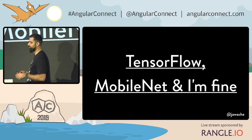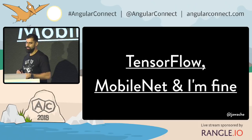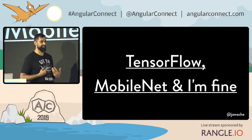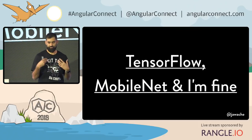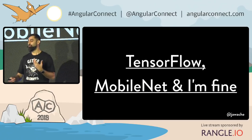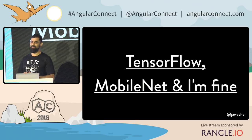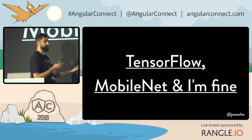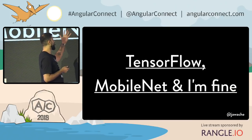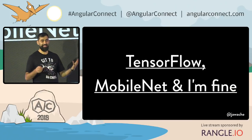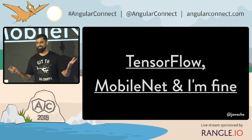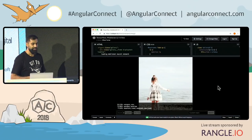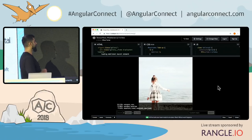I do workshops at our meet-up in London. About three or four months ago I was wearing a T-shirt that said 'Azure puppies and I'm fine' — long story. One of the attendees went away and built an application based on what we taught them, called 'TensorFlow, MobileNet, and I'm fine.' His name is Oliver Turner. This is the application itself.